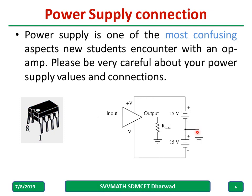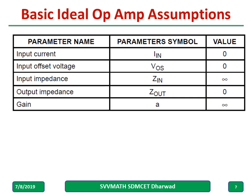Most students make wrong connections and the IC will burn — please remember this before you conduct the experiment. Ideal op-amp characteristics: input current is zero, input offset is zero, input impedance is infinity, output impedance is zero, and gain is infinite.